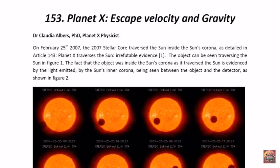Now on February 25th, 2007, the 2007 stellar core traversed the sun inside the sun's corona. As detailed in article 143, entitled Planet X traverses the sun, irrefutable evidence.